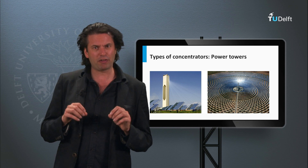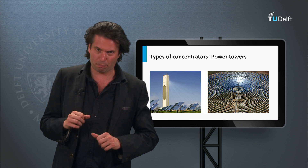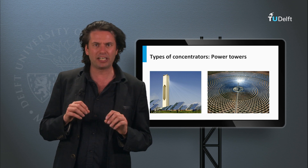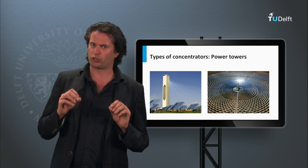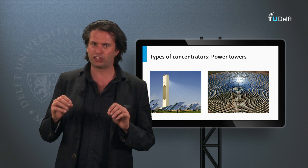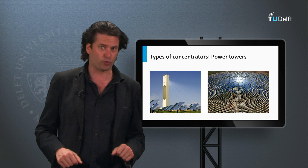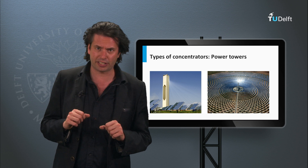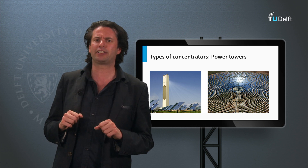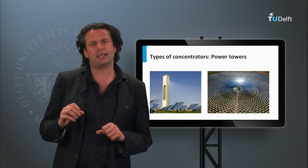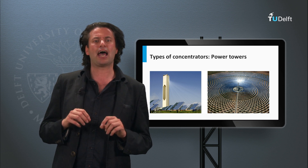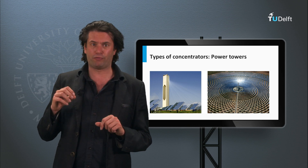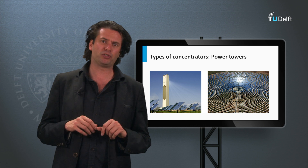Finally, we will finish the list with solar power tower plants. They consist of an array of dual-axis tracking reflectors, commonly named heliostats, which concentrate the sunlight on a central receiver containing the working fluid. The fluid can be heated to 500 up to 1000 degrees Celsius, and then used in a power generator or energy storage system. They are very efficient systems and have easier storage. The Solar 2 in California and the Plataforma Solar de Almeria are good examples of this technology.